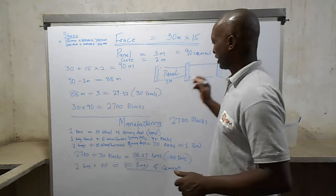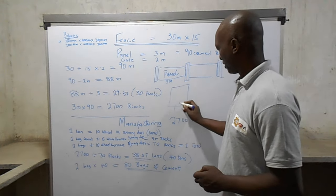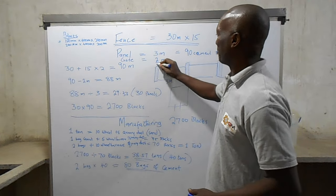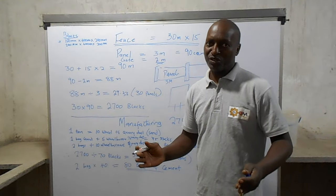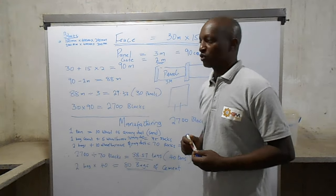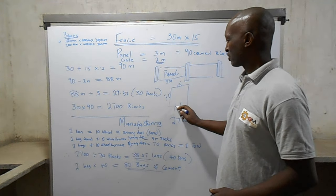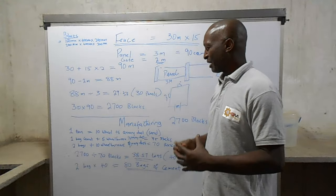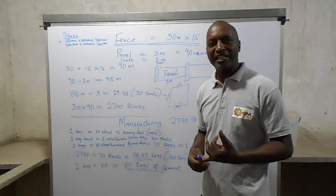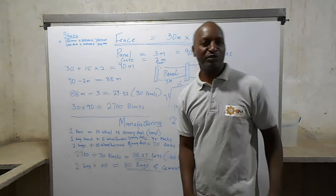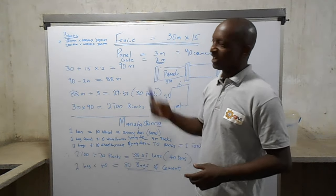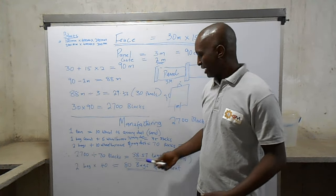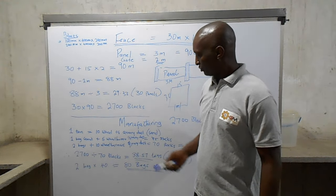On this 15 by 30 fence there will normally be a gate — the main entrance for vehicles — which I'll approximate at 2m wide. So we have a fence of 15m by 30 with an entrance of 2m. We want to know how many blocks we need, and also how much quarry dust and how many bags of cement we need to make those blocks.